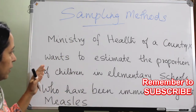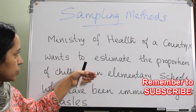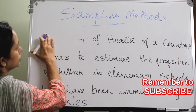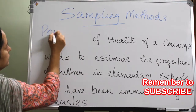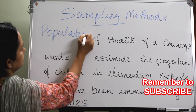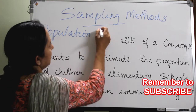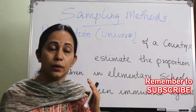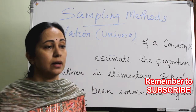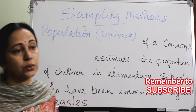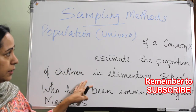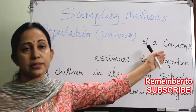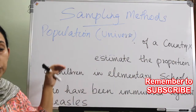In this case, the children studying in the elementary schools of the country are the population. There are two terminologies you have to remember. One is population or universe. The population or universe is all the people or all the items for which we want to study a particular characteristic. In this example, the whole of children studying in the elementary schools of country X constitute the population or the universe.